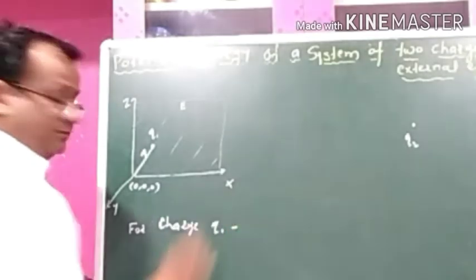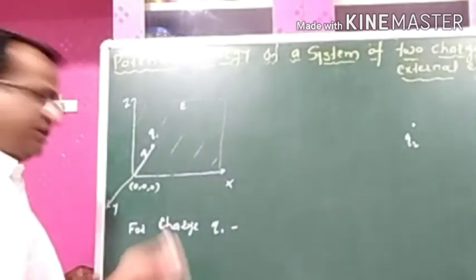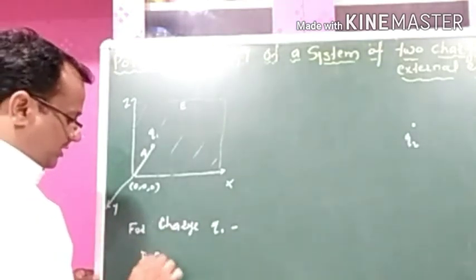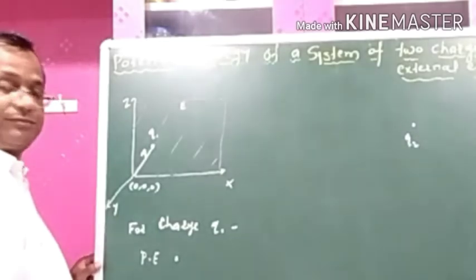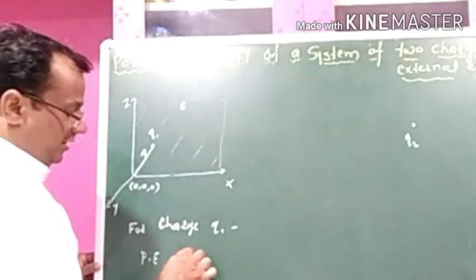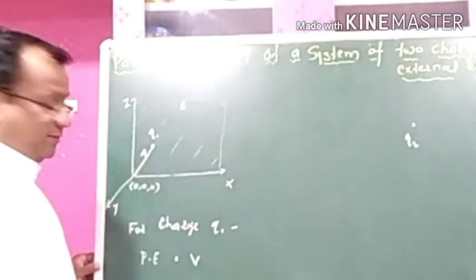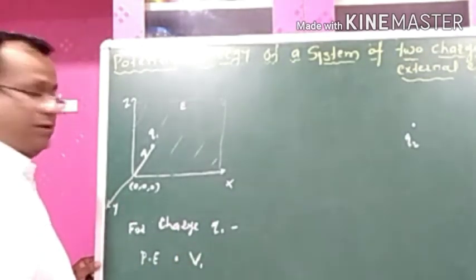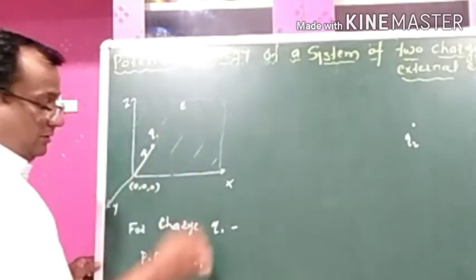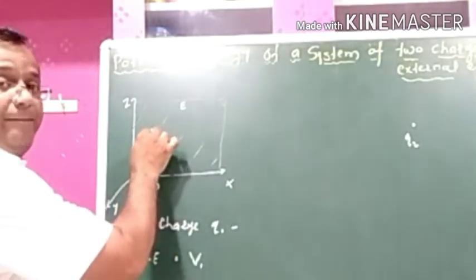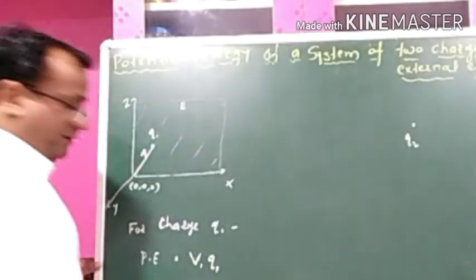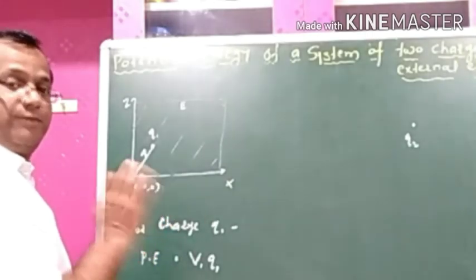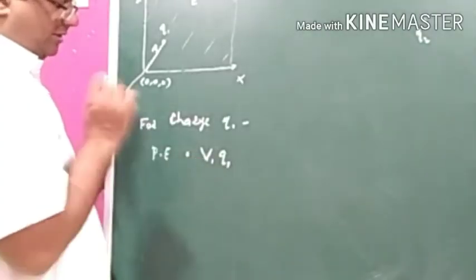The work done for charge q1, or simply the potential energy, is equal to the potential of this electric field at this point, which is V1, multiplied by the magnitude of charge q1. So potential energy = q1·V1. This is equation number one.